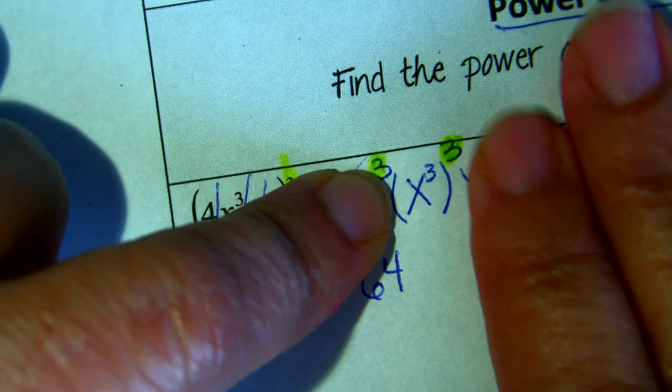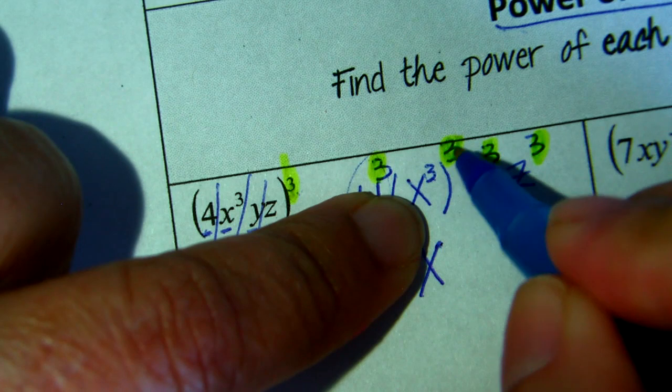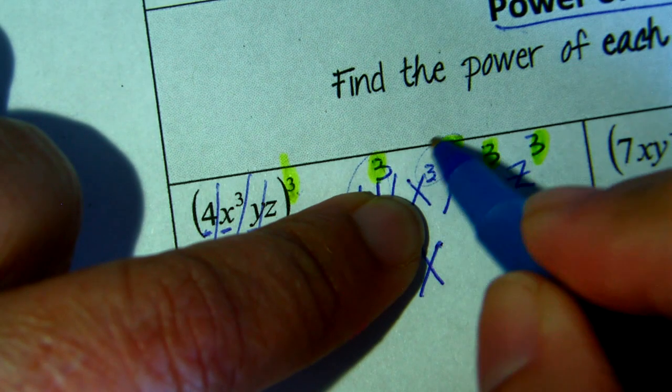Then, let's move on to this one. What do we have? We have X. And what do we say? Power to a power. You multiply the powers. So, 3.